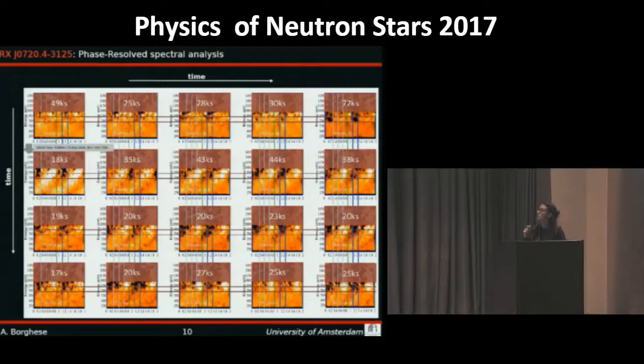So thanks to this hint, we proceeded to analyze all the XMM-Newton observations for this source. For each observation we built the energy versus phase image, and the blue line highlighted the presence of the feature present in most observations. This suggests that the line is stable over the time span covered by the observations, about 12 years, and it's not linked to the glitch event.